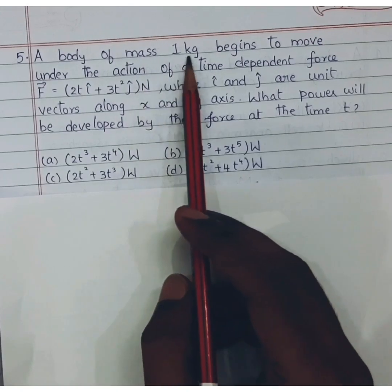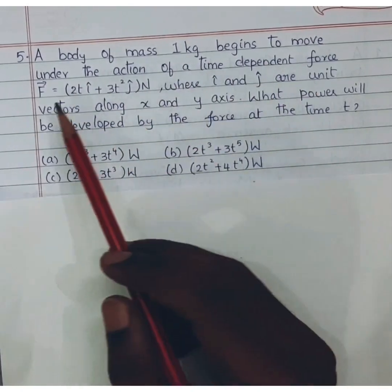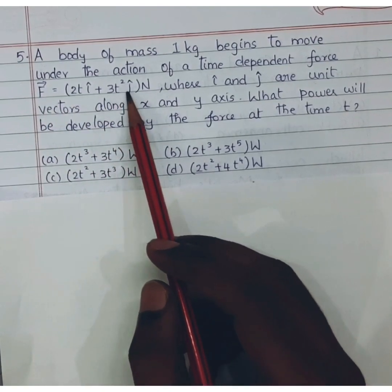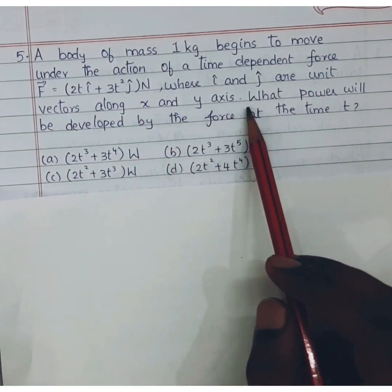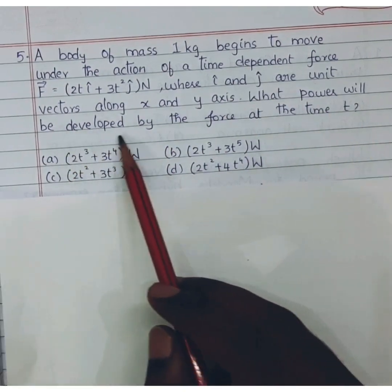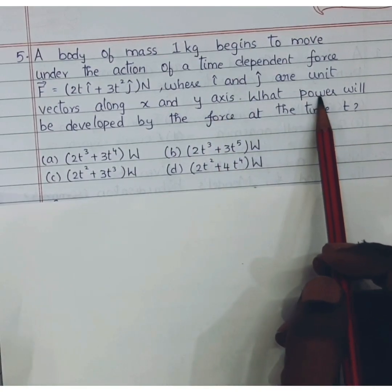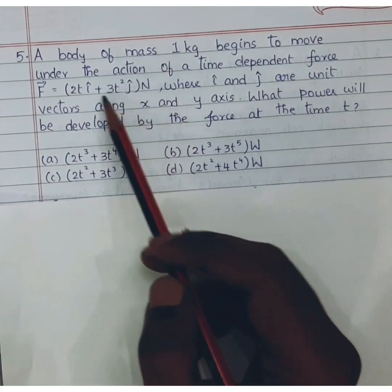A body of mass 1 kilogram begins to move under the action of a time dependent force F vector is equal to 2ti cap plus 3t square j cap newton, where i cap and j cap are unit vectors along x and y axis. What power will be developed by the force at the time t? So the formula for power is force into velocity. Force vector is given but velocity is not given. Instead mass is given.